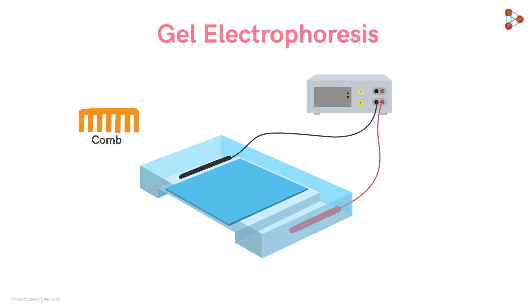Now tell me, where should the wells be formed? At the ends or at the center? Think about it. We know that the DNA fragments, being negatively charged, will travel from a point of negative charge to the point of positive charge. Thus, we need to form the wells to load the DNA samples near the negative terminal, or the cathode to be precise, so that the DNA will move towards the positively charged anode.